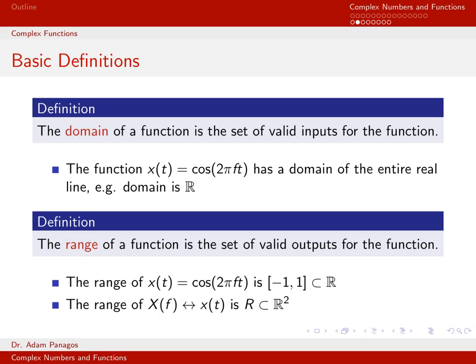The variable here is t. We're allowed to query this signal x of t at any time t on the real line — t equals 0, t equals 1, t equals 3,256.4. Any value for t can be plugged into this function and evaluated. So the domain of this function is the entire real line, which we denote by the capital R.